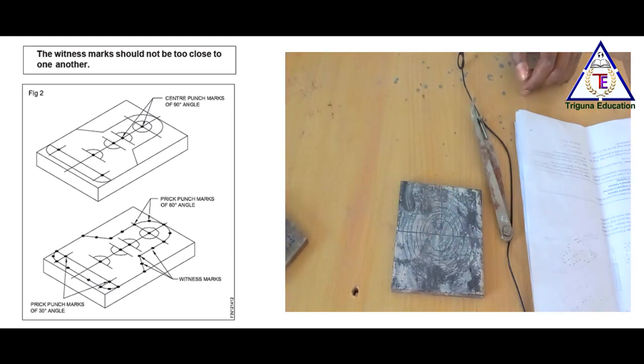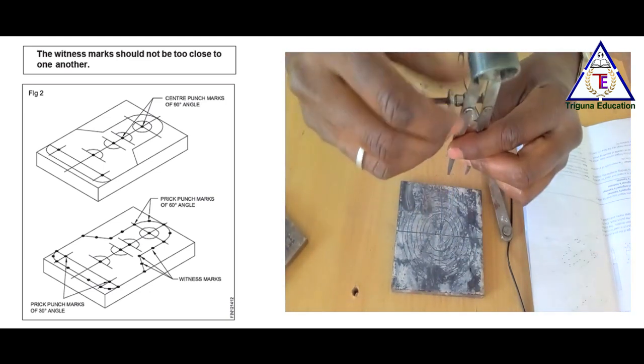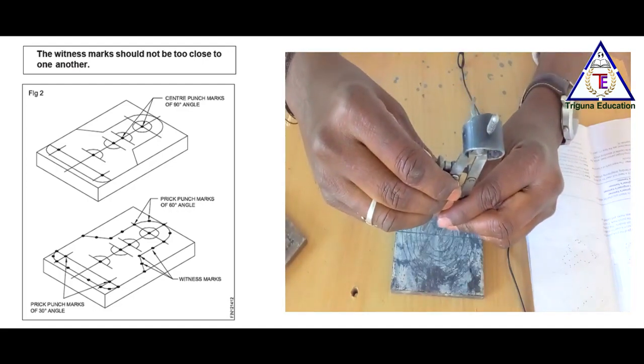We have a divider at this point. The divider point provides the proper seating in the punch mark at the exact location.